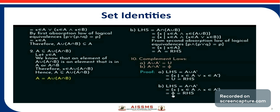Next are the complement laws. The first is: A union A complement equals the universal set, and the second is: A intersection A complement equals the empty set. For the first law, by the definition of union, the set of all X such that X belongs to A or X belongs to A complement is the universal set. So A union A complement equals the universal set.